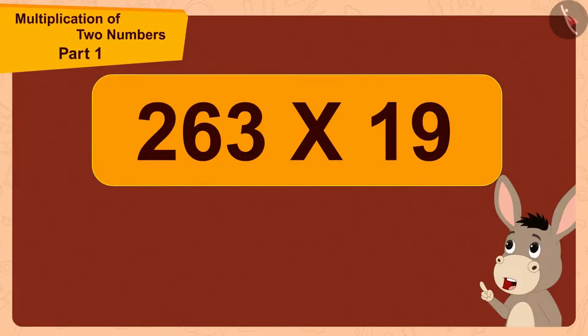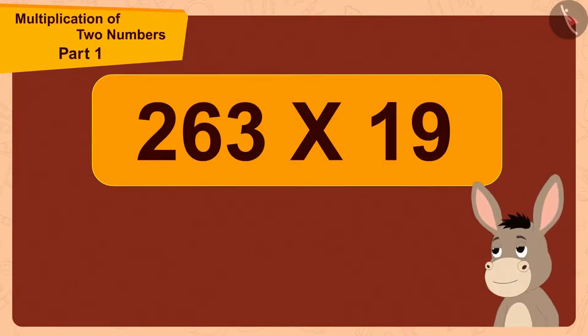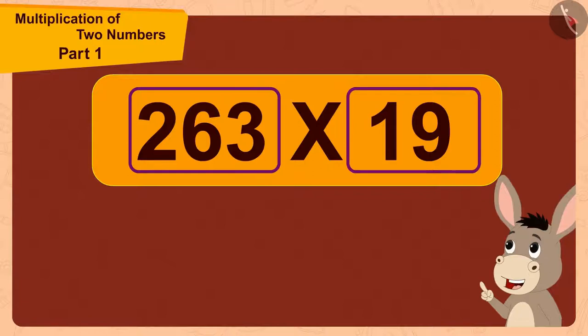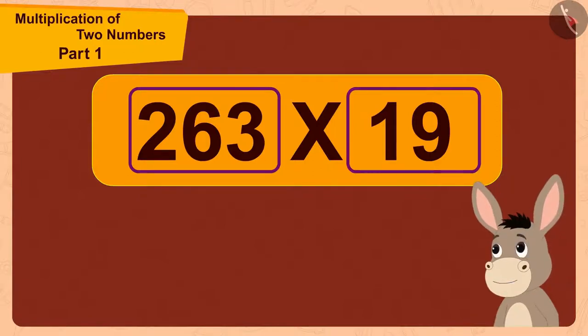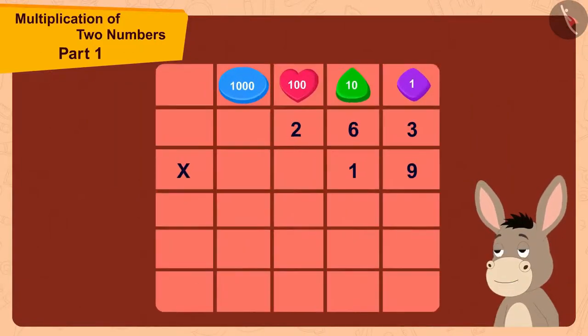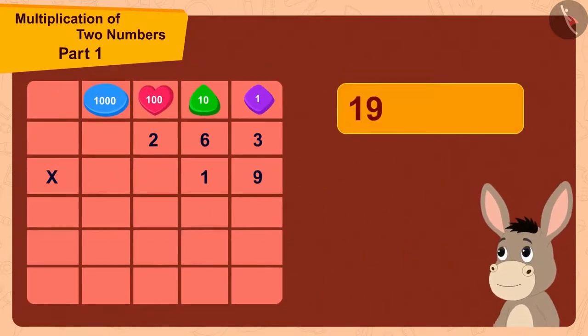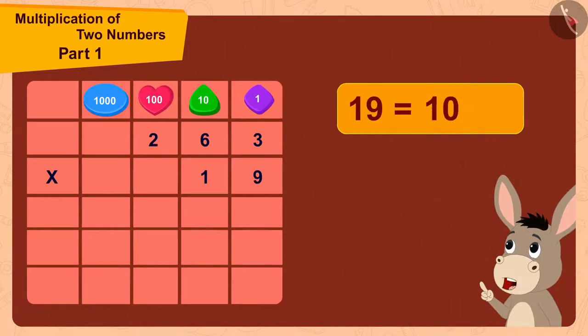Here we are multiplying the three-digit number 263 by the two-digit number 19. Since 19 is a two-digit number, I can do this multiplication in two steps.